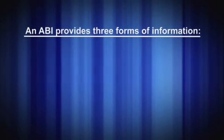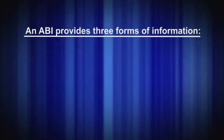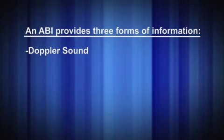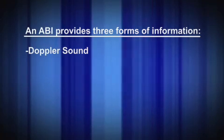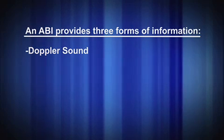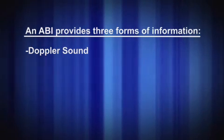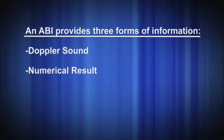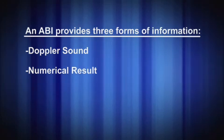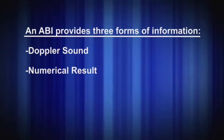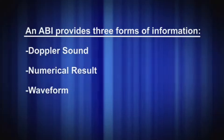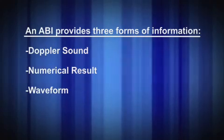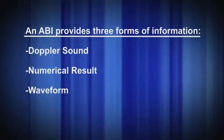An ABI provides three forms of information. The first is the Doppler sound, which to trained or educated ears has characteristic sounds for triphasic, biphasic, and monophasic waveforms. The ability to hear the differences comes with practice. The second is the index or numerical result from dividing the ankle systolic pressure by the brachial systolic pressure and comparing the results with known guidelines. The third is the waveform, which shows the elasticity of the artery and its response to the pressure of the pulsating blood flow, as well as the current state of vasoactivity, dilation, and constriction of the arteries.